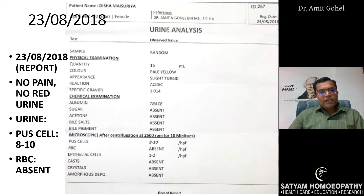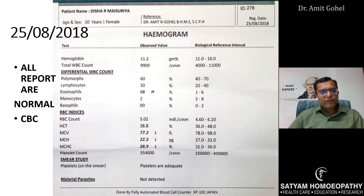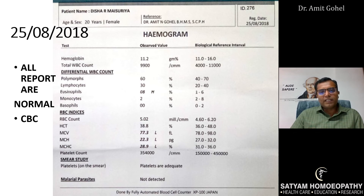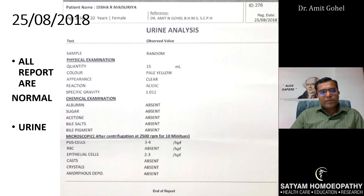I then advised her to come back three days later with a fresh report. She came on the 25th with the CBC report, which showed everything was normal — counts had become normal. The last urine report was absolutely normal: pus cells 3 to 4, RBCs absent, epithelial cells normal, and albumin, sugar, acetone, bilirubin all absent.